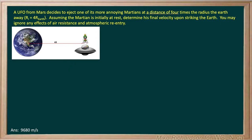Okay, here we've got a Martian that's being ejected from his spaceship a distance of four times the radius of the Earth away. That's the distance to the center of the Earth. So his initial distance is 4r.